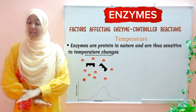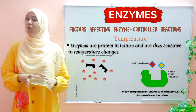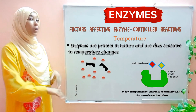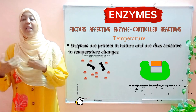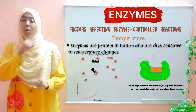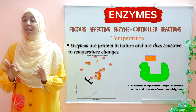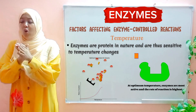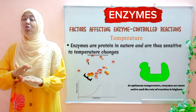At low temperatures, enzymes are inactive — they are dormant, not functioning normally — so the rate of reaction is also slow. As you increase the temperature, enzymes become active and the rate of reaction increases. This continues until you hit the optimum temperature, which is the best temperature at which enzymes function best, usually within the range of 35 to 37 degrees Celsius, where enzymes are most active and the rate of reaction is at its highest.